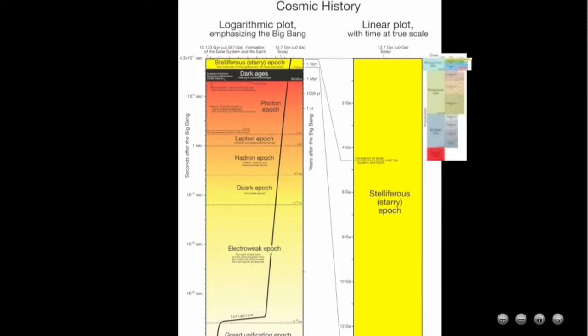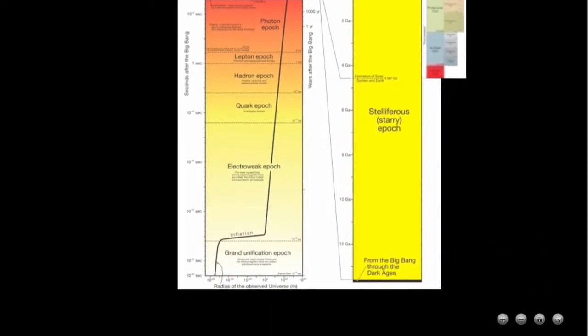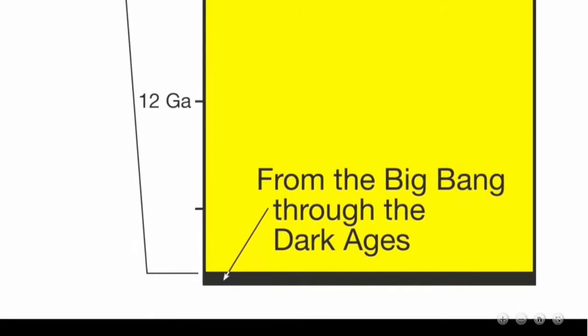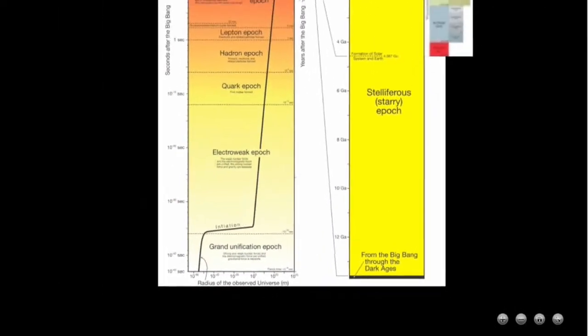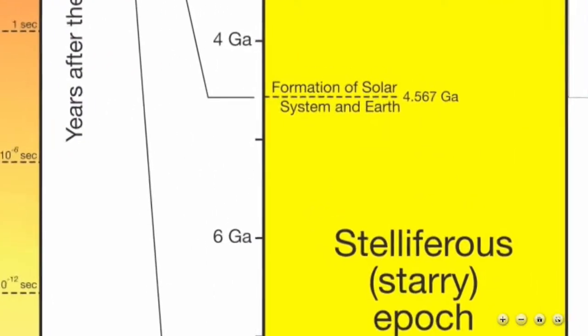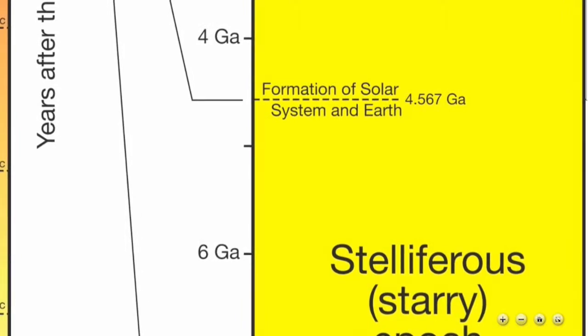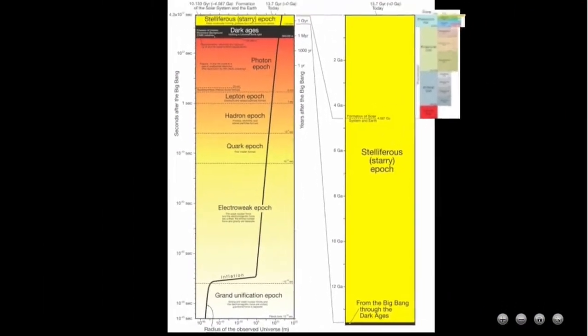Like Walter explained, these timescales are read from bottom to top. This yellow column represents all of cosmic history, and down at the bottom is the birth of our universe, the Big Bang. As we work our way up, you can see the formation of our solar system and the Earth at 4.5 billion years ago. Remember, the present is always at the top.